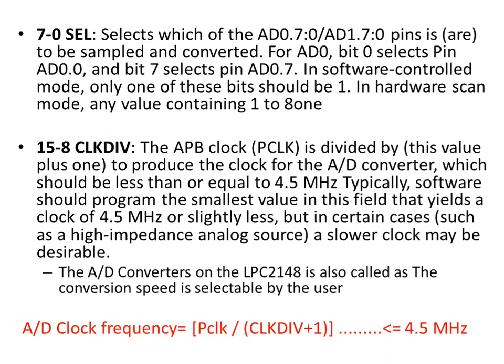Bits 15:8 are the CLKDIV field. The APB clock PCLK is divided by this value plus 1 to produce the clock for the AD converter, which should be less than or equal to 4.5 MHz typically. Software should program the smallest value that yields a clock of 4.5 MHz or slightly less. In cases such as high-impedance analog sources, a slower clock may be desirable. The AD conversion speed is selected by the user as: AD clock frequency = PCLK / (CLKDIV + 1), giving 4.5 MHz.